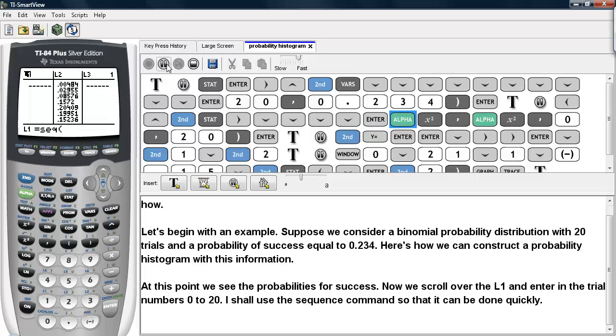We'll go ahead and tell it to start counting using I as the counter. And we'll start counting at 0 and stop counting at 20.